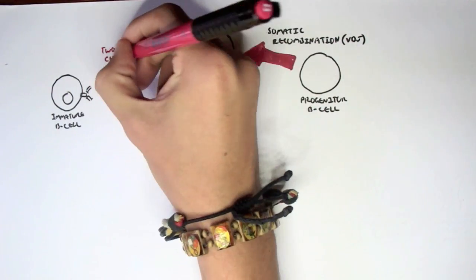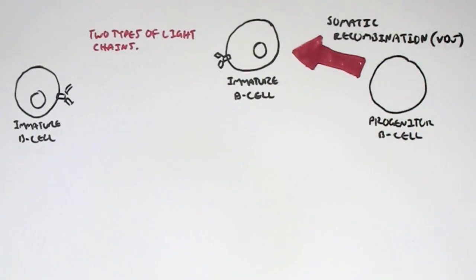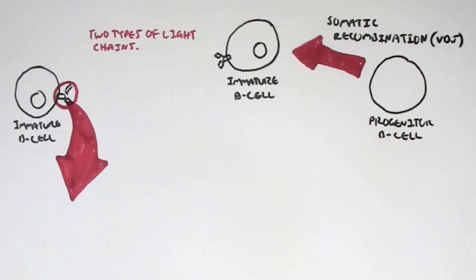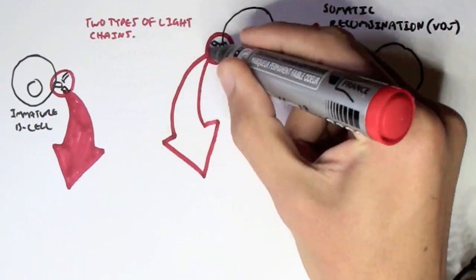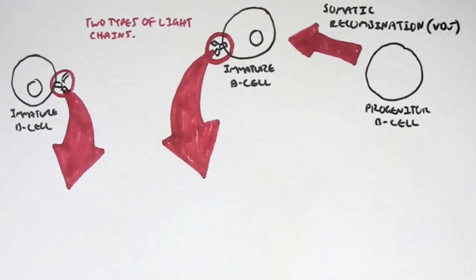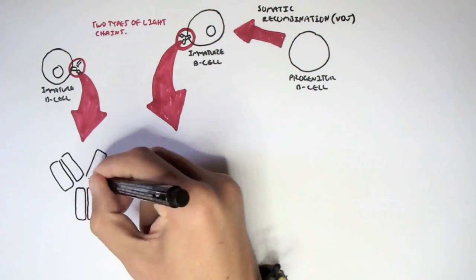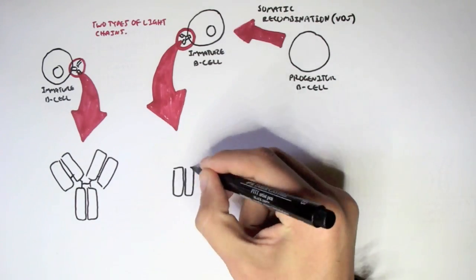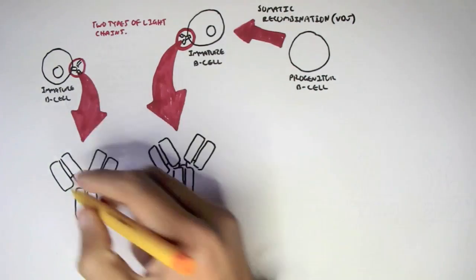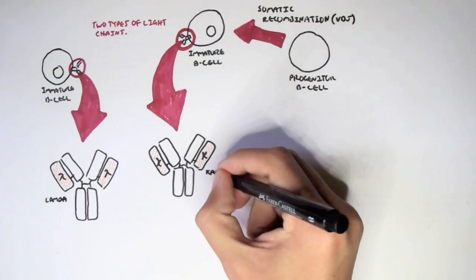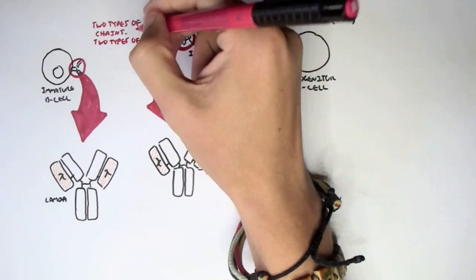Important information to know is that there are two classes of light chains — not two types in terms of gene shuffling within the light chain gene, but two actual classes. For example, comparing two immature B cells, they both have antibodies but the light chain class is different: one is lambda light chain and the other is kappa light chain, which increases antibody diversity.